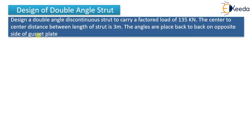The problem statement says: design a double angle discontinuous strut to carry a factored load of 135 kN. The center to center distance between the length of the strut is 3 meters. Angles are provided placed back to back on opposite sides of the gusset plate. You have to design a particular section which should carry a factored load of at least 135 kN.